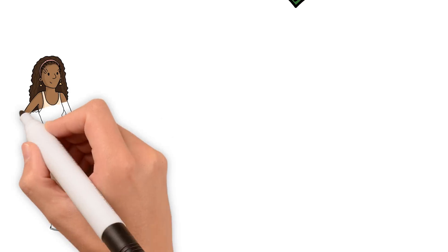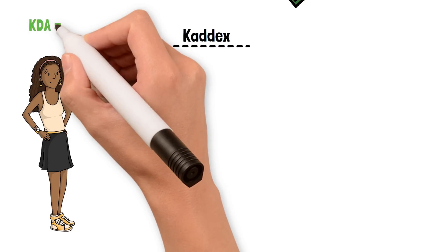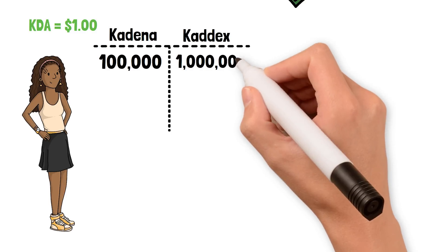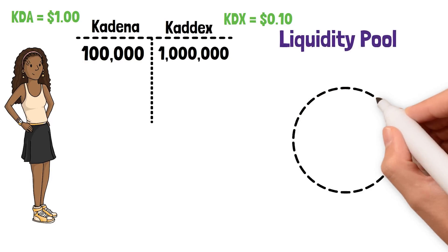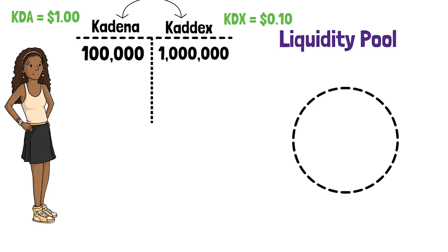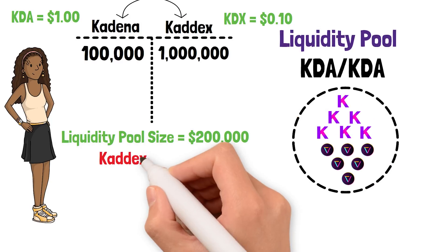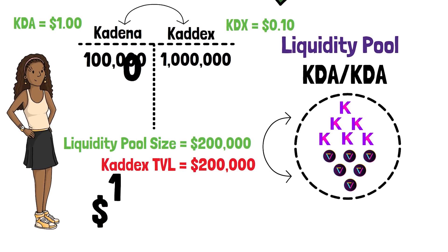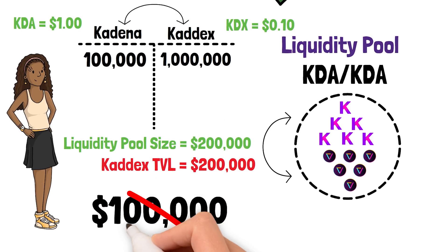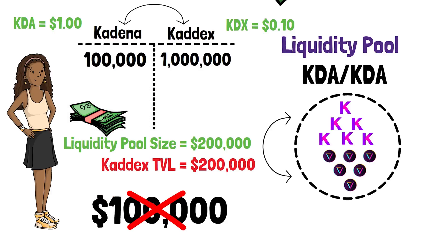Let's pretend KadeX just launched and Bri was the first person to use it. She had 100,000 KDA coins at $1 each and 1 million KadeX coins at 10 cents each. Bri could take her $100,000 in KDA and her $100,000 in KDX and create a KDA/KDX liquidity pool. Anyone else could then swap KDA for KDX or vice versa, as long as they didn't want to swap more than $100,000 worth. Because Bri is the only liquidity provider, she makes 100% of swapping fees — 0.3% of every transaction.